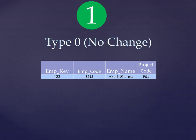In this scenario, no change is preserved and we only have the original values in the table. For example, if we have a table with employee key, employee code, name, and project code, and the project is changing for an employee, that change will not be preserved and the table will always contain the original values. This is not something seen much in current scenarios.